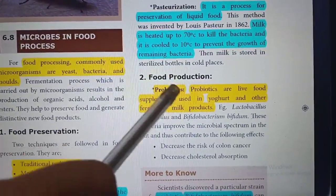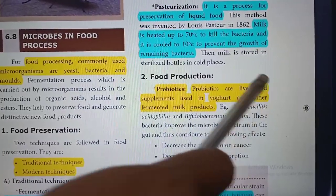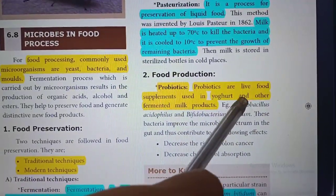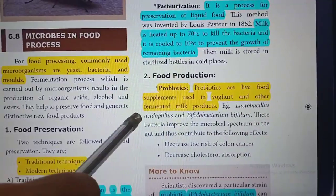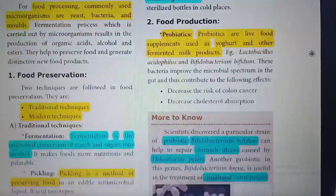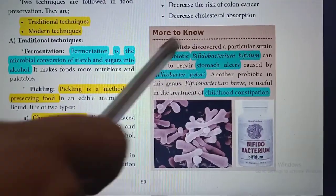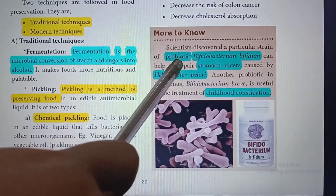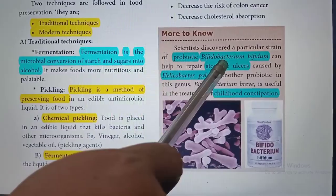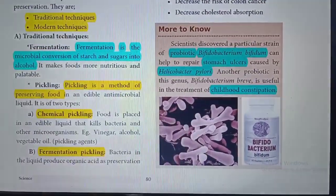What are probiotics? Probiotics are living food supplements used in yogurt and other fermented milk products. An example of a probiotic is Bifidobacterium, which helps to repair stomach ulcers.